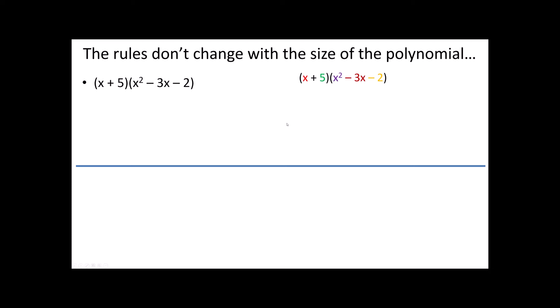Just like before, I'm going to color code this so you can see where I'm getting my numbers from. I'm going to take my x multiplied by x squared first, then that same x multiplied by the negative 3x, and then that same x multiplied by the negative 2. Notice that I'm adding all of these terms together. Once I've multiplied all three by the x, I'm then going to multiply all three of them by the 5: that's 5 times x squared, then 5 times negative 3, and then 5 times negative 2.